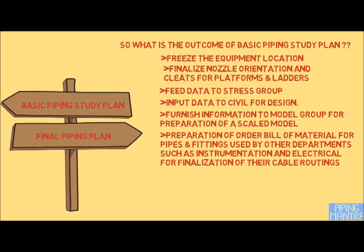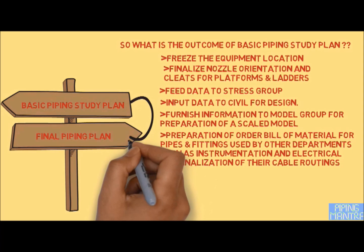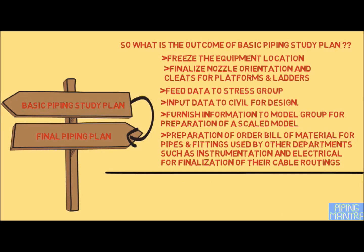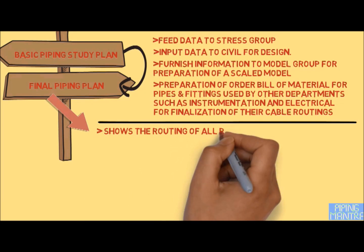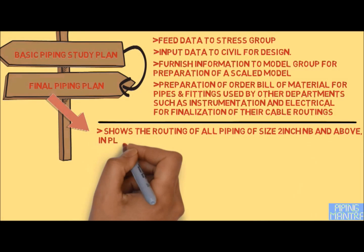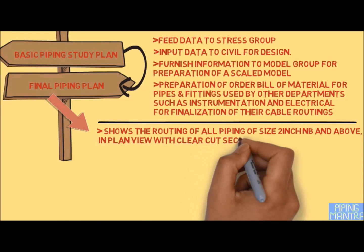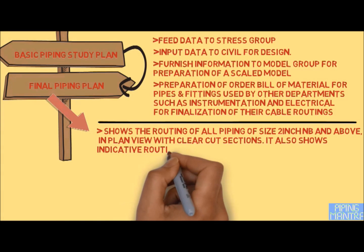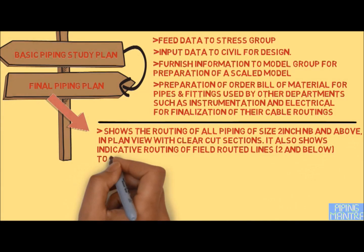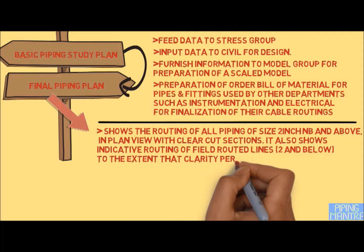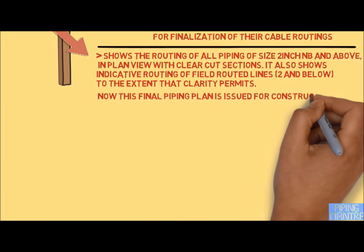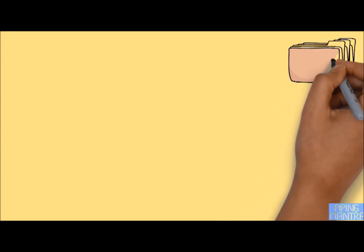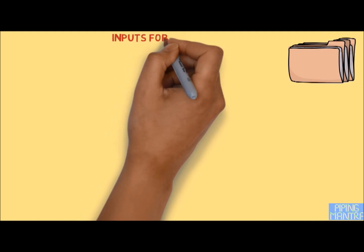We also furnish information to the model group for preparation of scale models whenever required, and prepare order bill of materials (MTO) for pipe fittings used by other departments such as control systems and electrical for finalizing cable duties. Piping plans are updated after receiving comments from other departments. The basic piping study plan, once frozen, becomes the final piping plan, showing routing of all piping of 2 inch and above in plan and sectional views. Below 2 inch lines may also be shown if clarity permits.